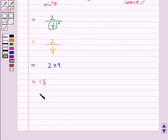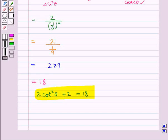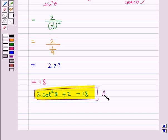Thus we get 2 cot²θ plus 2 is equal to 18. This is our final answer. This completes the session. Hope you have understood the solution of this question. Thank you.